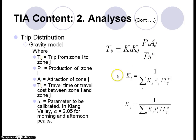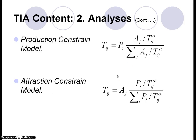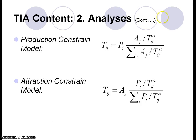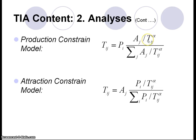We manipulate the gravity model to distribute the traffic, using what we call the production-constrained form. Through mathematical manipulation, we distribute the production of the development according to the attraction at each destination and the travel time, travel cost, or travel distance to that destination.